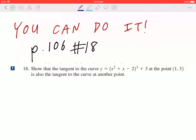Hi everyone, let's take a look at number 18 on page 106. Show that the tangent to the curve y = (x² + x - 2)³ + 3 at the point (1, 3) is also the tangent to the curve at another point.